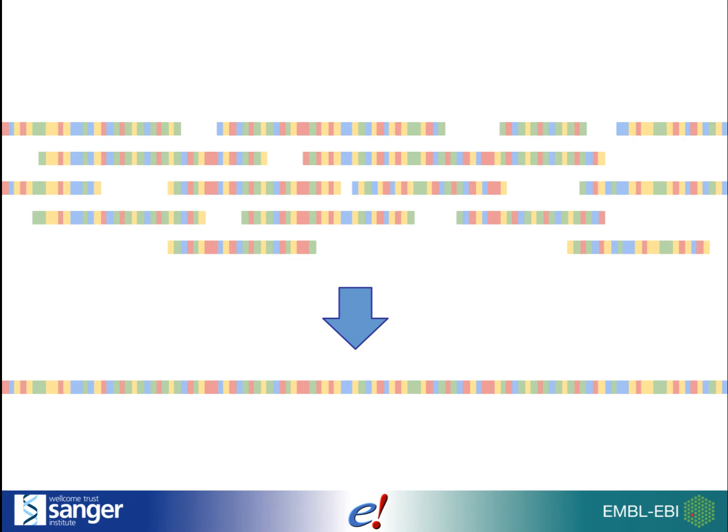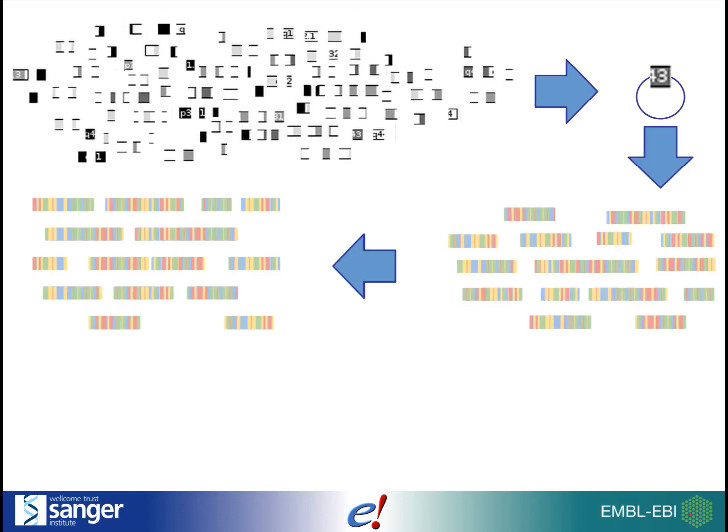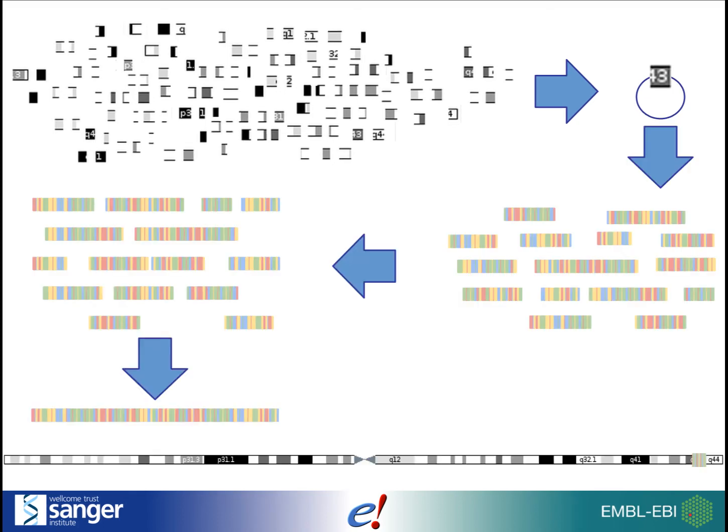Sometimes, you might see scaffolds instead of, or as well as, chromosomes. This means that a long stretch of genomic sequence has been assembled, but we have not been able to work out which chromosome it belongs to. For some genomes, particularly those that were sequenced a long time ago, parts of the genome were cloned into bacteria. Each of these was then sequenced and assembled, then put back together. We call these contigs.